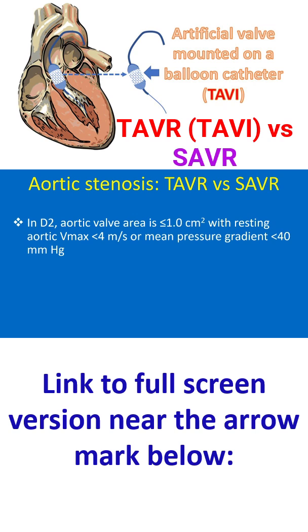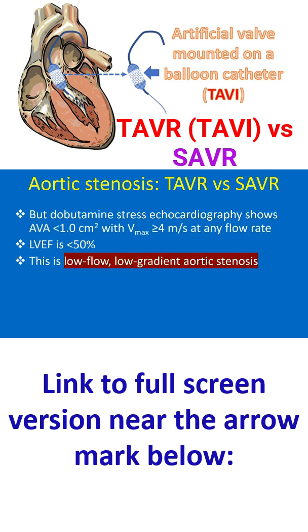In D2, aortic valve area is less than or equal to 1 square centimeter with resting aortic Vmax less than 4 meters per second or mean pressure gradient less than 40 mmHg. However, dobutamine stress echocardiography shows aortic valve area less than 1 square centimeter with Vmax more than or equal to 4 meters per second at any flow rate, and LVEF is less than 50%. This is low flow, low gradient aortic stenosis.